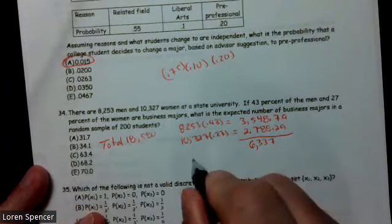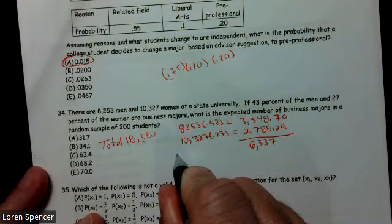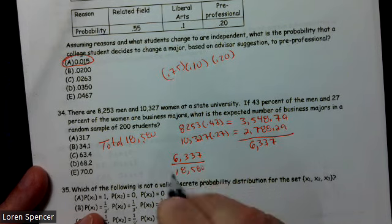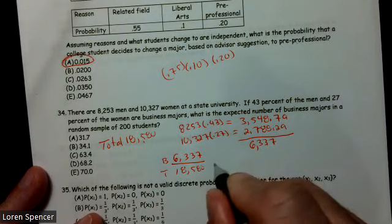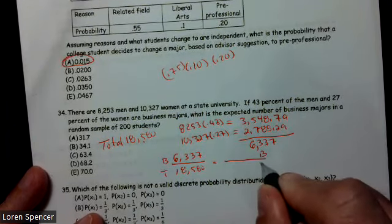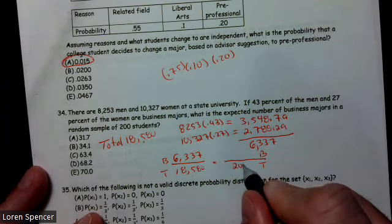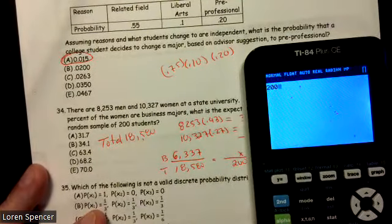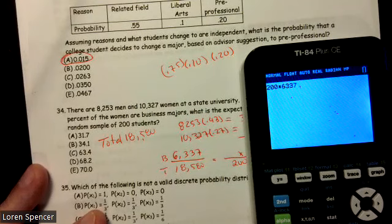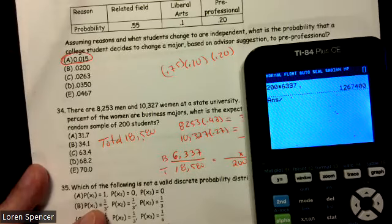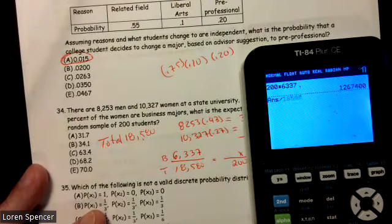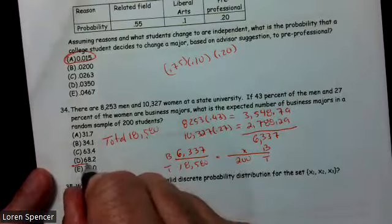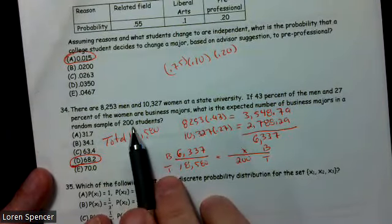And if I add those up, I find the total number of business majors. And I find there's about 6,337 business majors that are men and women. So if it's proportional, I can sit there and go, that's the total number of business majors out of the total number of students. So 6,337 over 18,580. That's business majors over total. And they want to know from the sample business majors over total, our sample size is 200. So taking 200, multiplying it by 6,337, the number of business majors, and dividing that by the total campus size, I end up getting about 68.2. So we'd expect there to be about 68.2 business majors in that sample of 200.